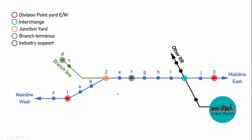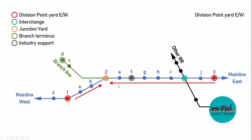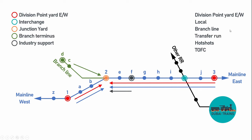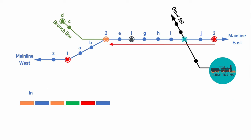We're going to stay at junction yard number two. What trains are arriving there? We have trains coming in from the division point yard from both east and west sides, a local that might have originated from yard two and went up the line and back, or originated from yard three. There's also a branch line transfer, a transfer to the industry support yard, and hotshots — a whole lot of trains can be expected at yard two.